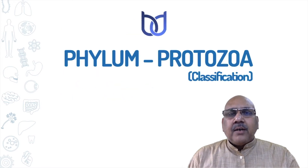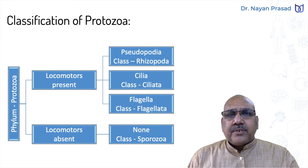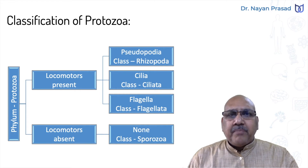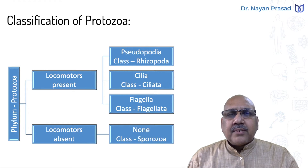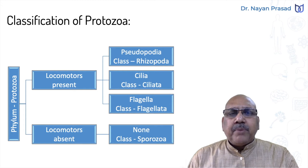Protozoans are unicellular organisms. They differ in certain features, and especially on the basis of presence or absence and the types of different locomotory structures found in them, protozoans have been divided into four main classes. Different authors follow different types of classification; we have taken here the most simple way.